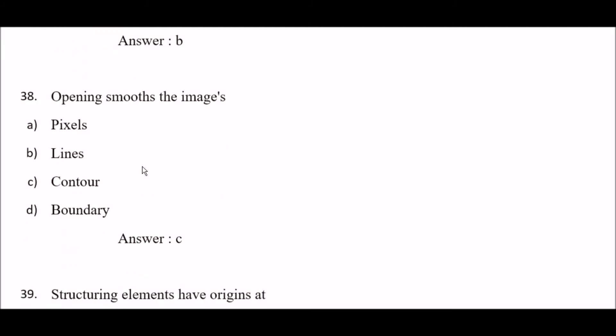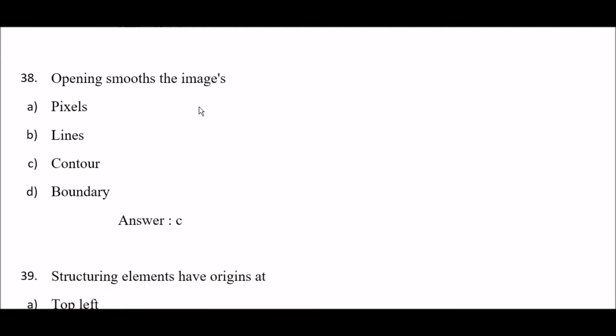Next question: opening smooths the image's — option A: pixels, option B: lines, option C: contour, option D: boundary. The right answer is option C — contour.